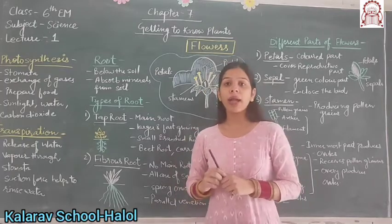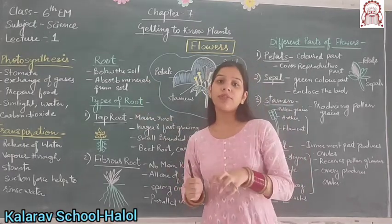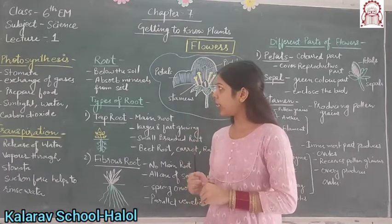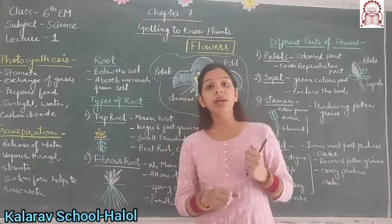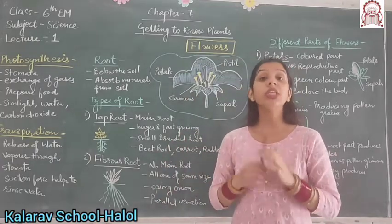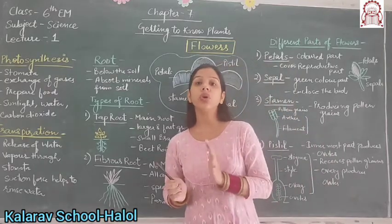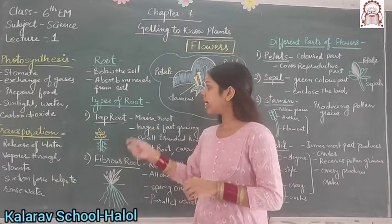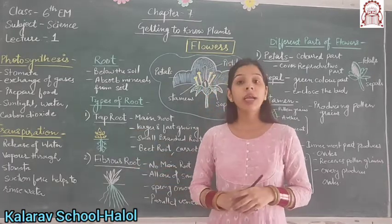The next part of the plant is root. Root lies below the surface of the ground, that is, under the soil. Its main function is to absorb minerals and other nutrients from the soil, which are helpful for the growth of plants. There are two types of roots: number one is tap root, and number two is fibrous root.